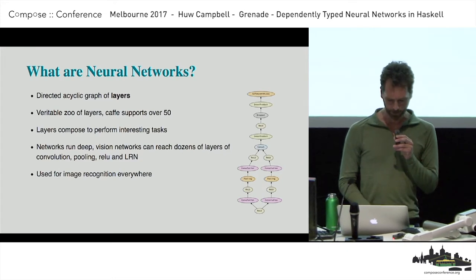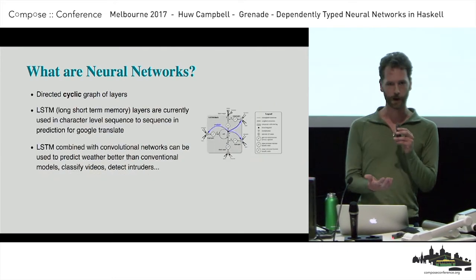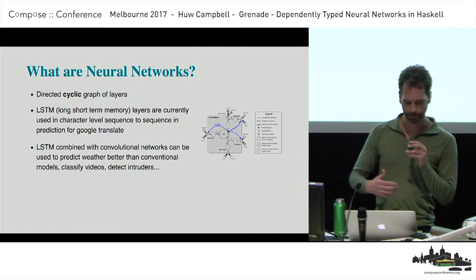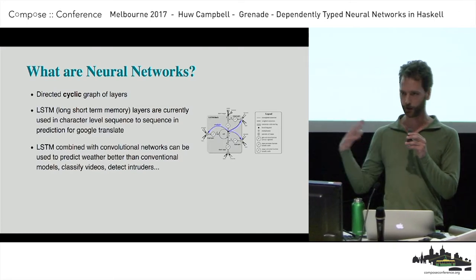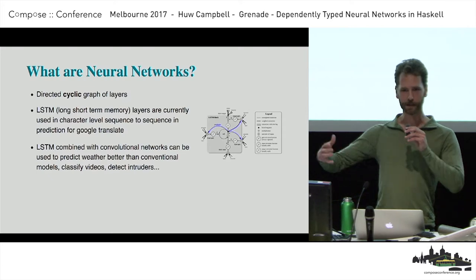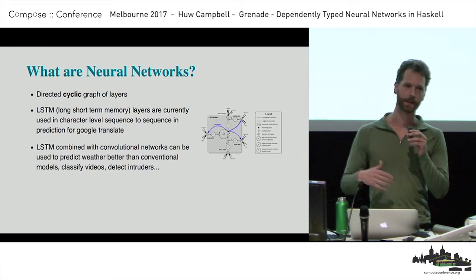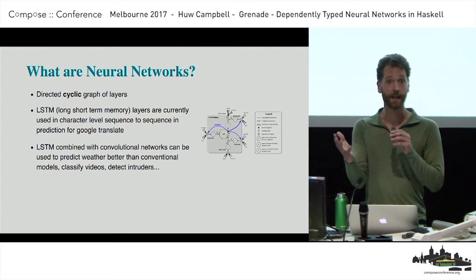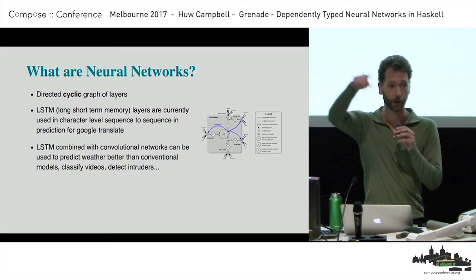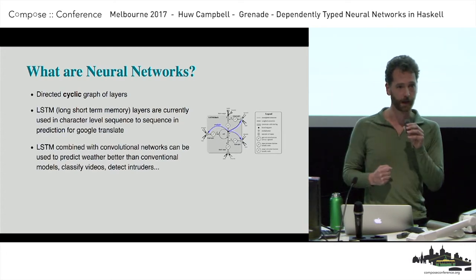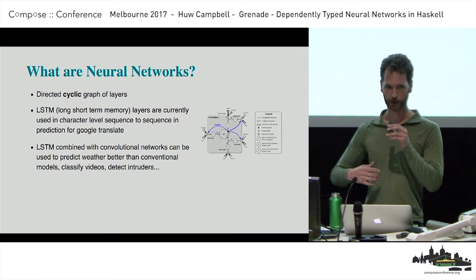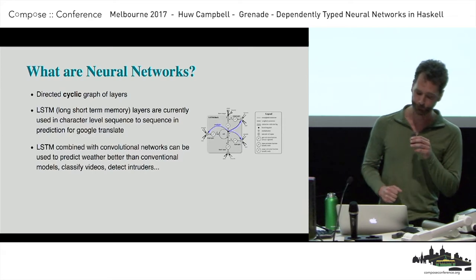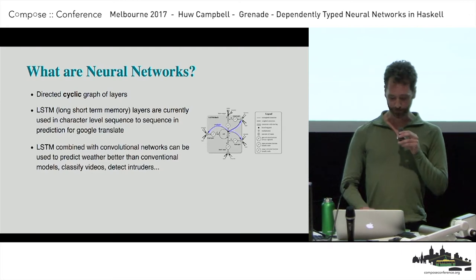This is a directed acyclic graph, but networks can also be directed cyclic graphs. If a normal straight-line acyclic graph approximates a function, then directed cyclic graphs approximate or learn programs. LSTMs are used for things like predicting the next character in a sequence — you can translate text with two LSTMs, one going in and one coming out. If you compose them with a convolutional layer, you can do weather prediction, looking at a patch in the sky and seeing how weather patterns evolve over time.